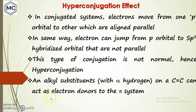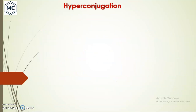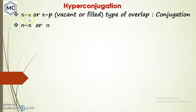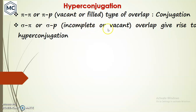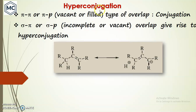When an alkyl substituent with an alpha hydrogen atom is present within a carbon-carbon double bond, it can act as an electron donor to the pi system. The alkyl substituent with alpha hydrogen can donate electrons to the C=C pi bond. In conjugation, pi-pi or pi-p orbitals overlap, but in hyperconjugation, sigma-pi or sigma-p orbital or vacant p orbital overlap occurs. That is the difference between conjugation and hyperconjugation.